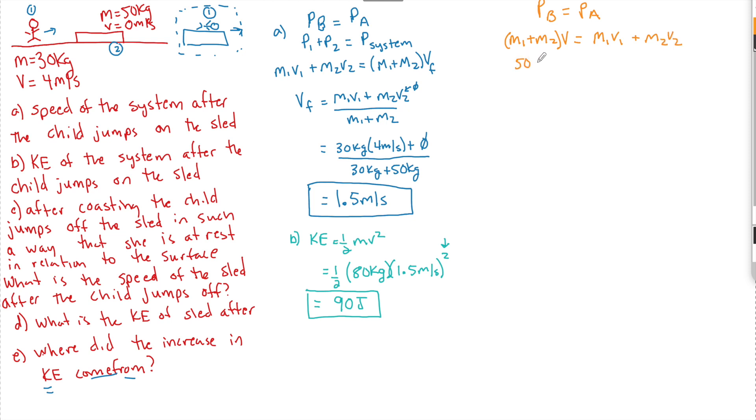So we substitute in 50 kilograms plus 30 times the speed that it was before, 1.5. So now this after speed becomes the before speed. We have zero now because this child is going to be at rest in relation to the surface. So they're not going to have any momentum after they jump off plus the 50 kilogram sled times V. And we see that the final velocity now of the sled is going to be 2.4 meters per second.